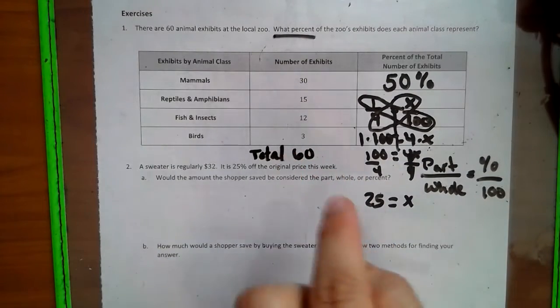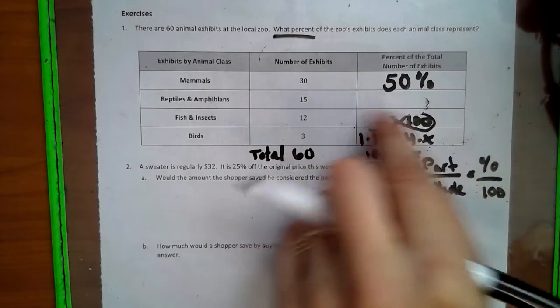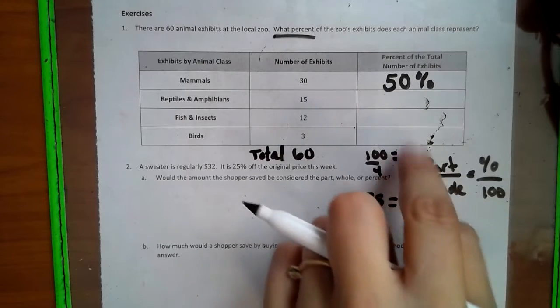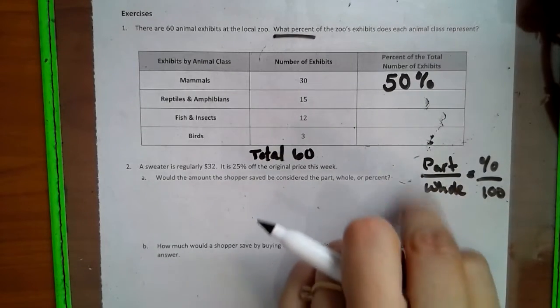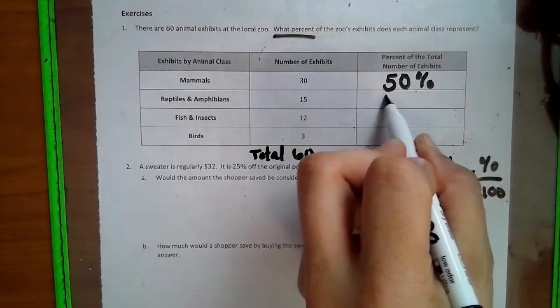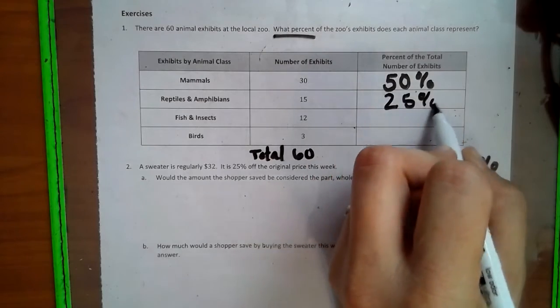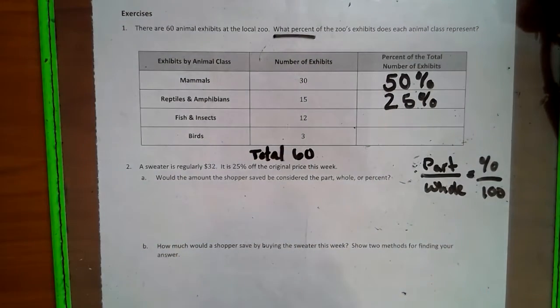X equals 25. So the answer to the reptiles and amphibians, 15 of the 60 is 25%. So like I said, make sure you're putting these in a different spot because I'm erasing those. 25%. So on and so forth with the other ones. You can take that when we do our in class piece.